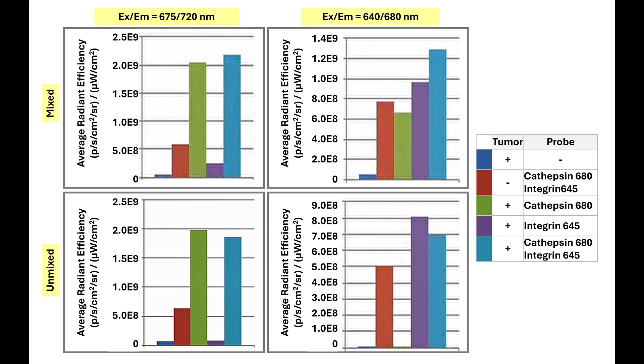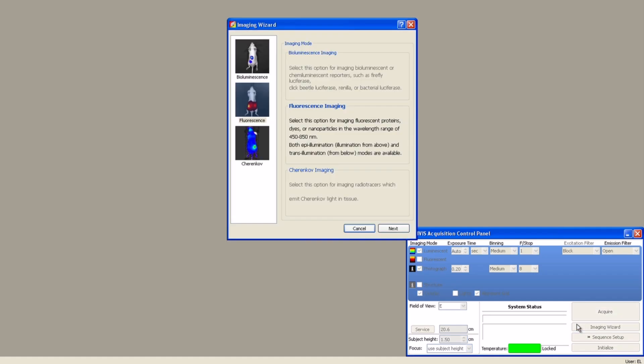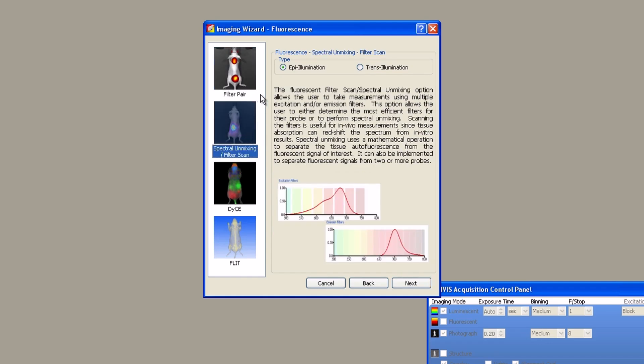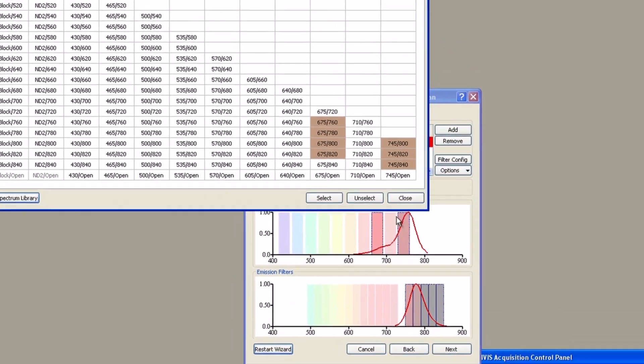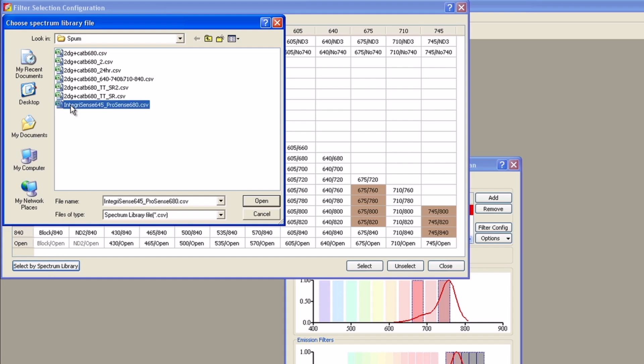Now that we have generated our library and tested the efficacy of our probes with a pilot study, we can proceed to a full-scale high throughput study. Libraries can also be applied to studies where the source is in different locations, for example a primary tumor or lung metastases. However, the studies must have the same basic design: same probes, same mouse strain, and same filter combinations. Now let's go through how you would unmix new images using a pre-saved library. Select the imaging wizard, fluorescence, spectral unmixing, and epi illumination. Click next, click filter configuration, and then select by spectrum library. Choose your library and click open. This will automatically load the filter selections from the previously generated library.